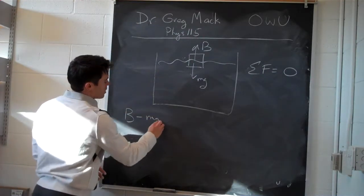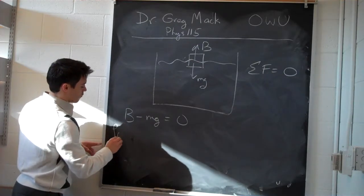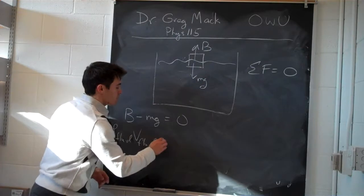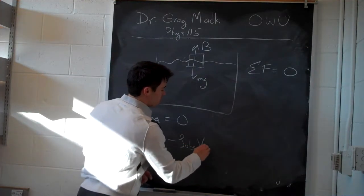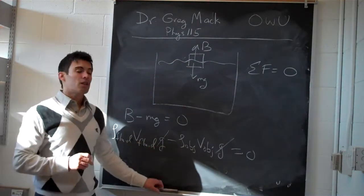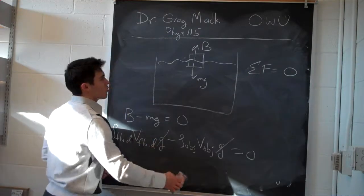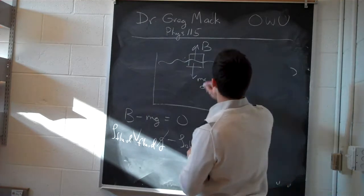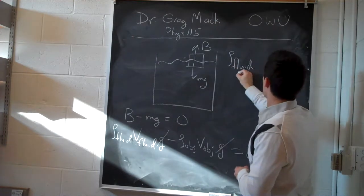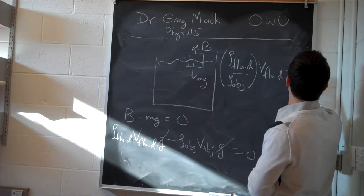So B minus mg equals zero. The buoyant force equals the density of the fluid times the volume of fluid displaced times g, and that equals the density of the object times the volume of the object times gravity — and we know that equals zero. Canceling g and rearranging gives us: rho_fluid over rho_object times V_fluid equals V_object.